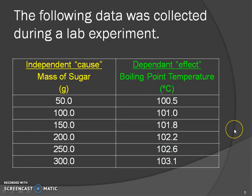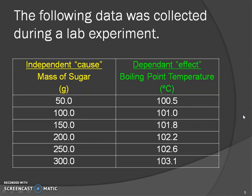Your independent cause is your mass of sugar in grams — that's what the 'g' stands for. This is what we're changing in our experiment. The effect, or dependent variable, is our boiling point temperature in degrees Celsius. The boiling point of pure water is 100 degrees Celsius, but if I look at this data, when I add a solute — in this case sugar — it changes the boiling temperature. Now that pure water has a solute dissolved in it, it is now a solution.